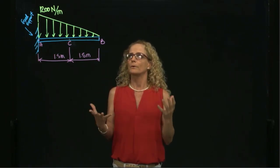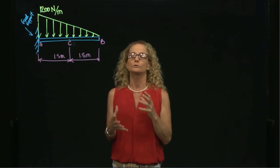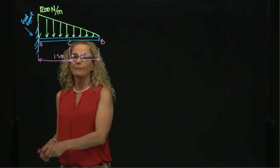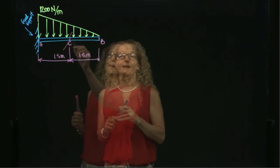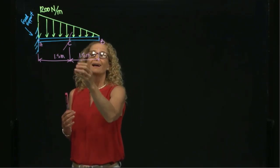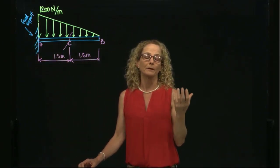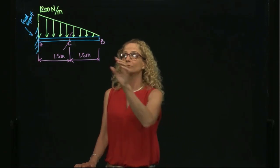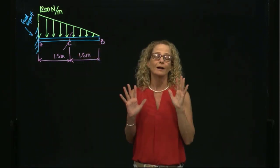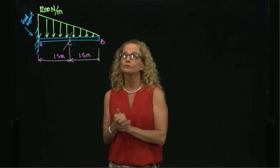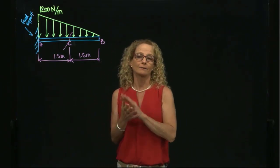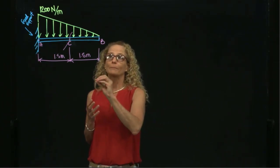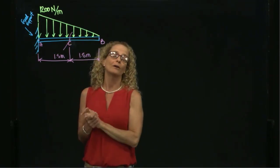I have always solved problems by finding the external reactions first. However, in this case, if I go directly and make a cut and draw the free body diagram of the right side of the beam, those external reactions will not appear. So in this particular case, where I do not have any external reaction on one side, I can skip the step of finding the external reaction.